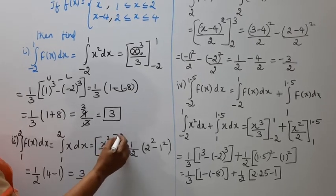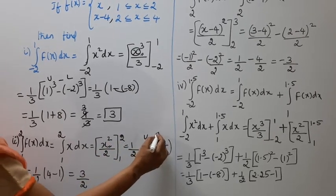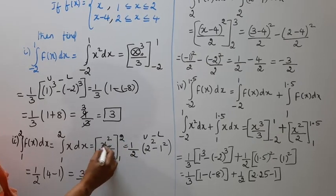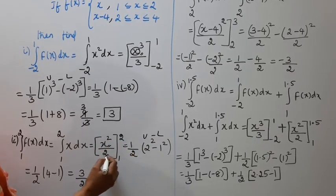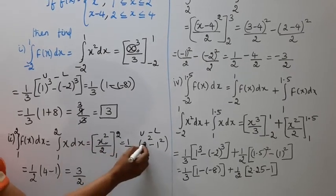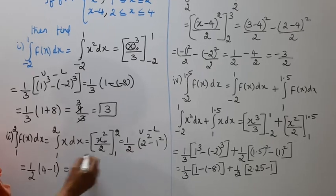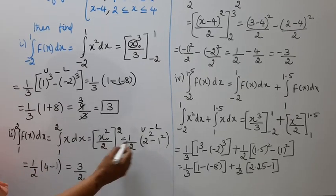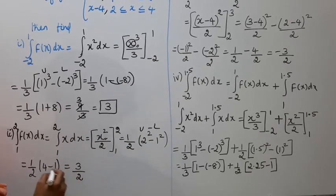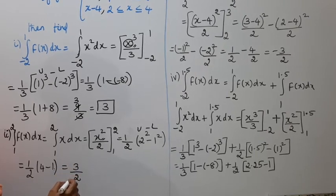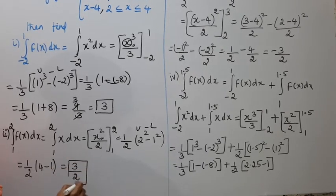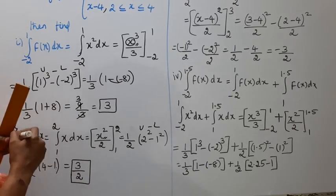Applying upper limit minus lower limit: 1 by 2 times 2 squared minus 1 squared. 2 squared is 4, 1 squared is 1. So 4 minus 1 equals 3, giving 3 by 2. The answer for the second subdivision is 3 by 2.